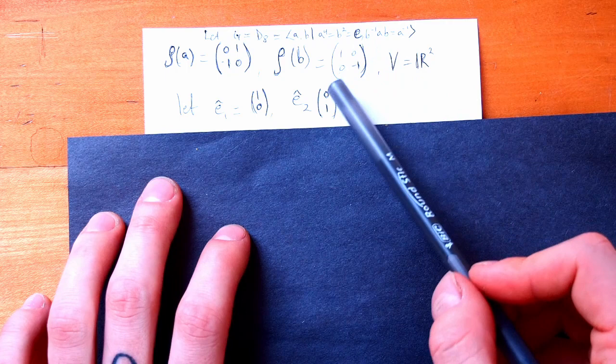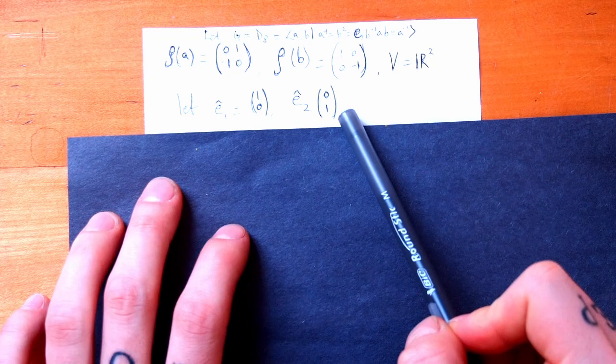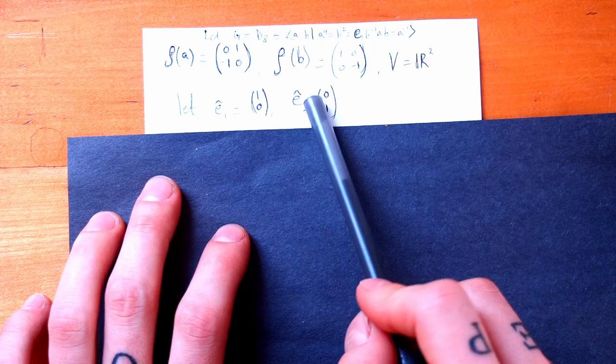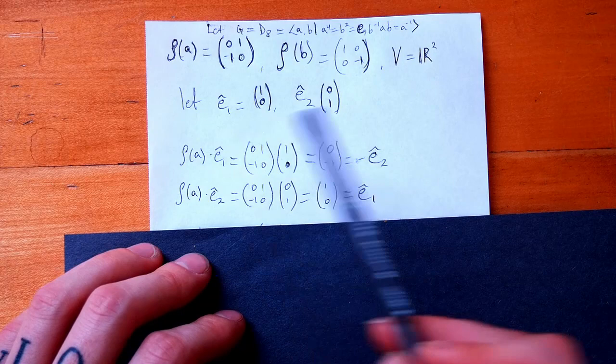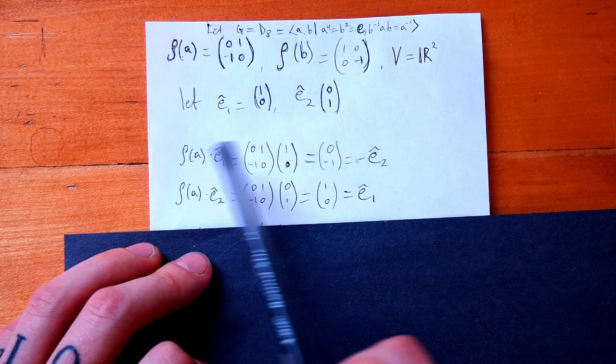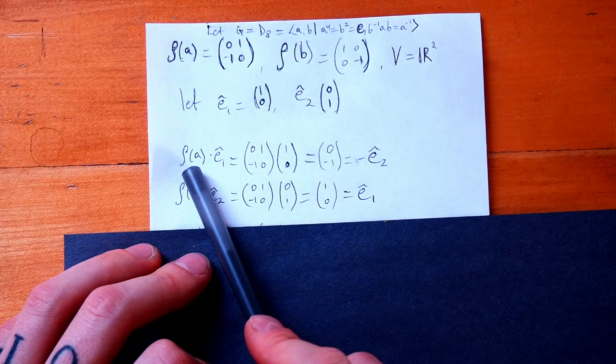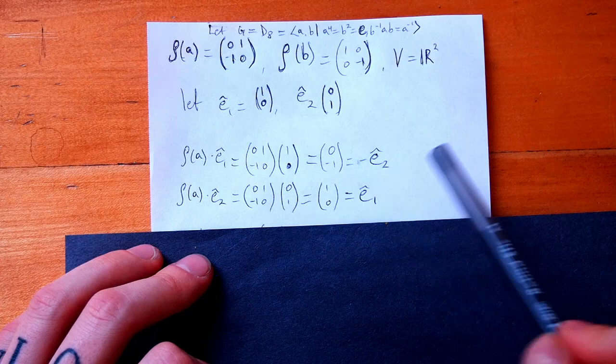I picked the standard unit vectors because they're easiest to work with, but any basis for R² would work. The book defines everything as a right action, whereas here the group element acts on the left, so we say it's a left action. These calculations turn out a little different, but I'm following the convention where functions act on the left. Here we just have basic matrix-vector multiplication.